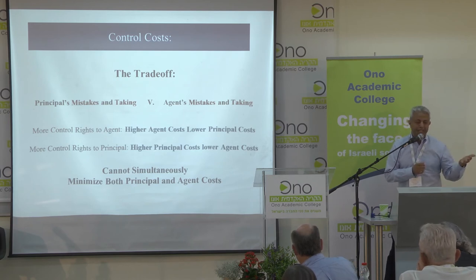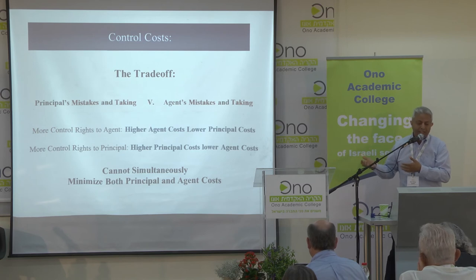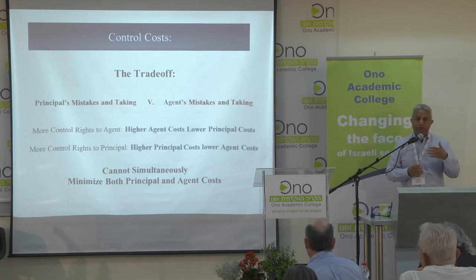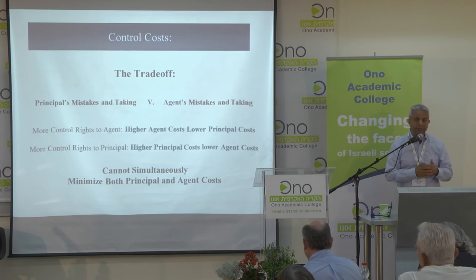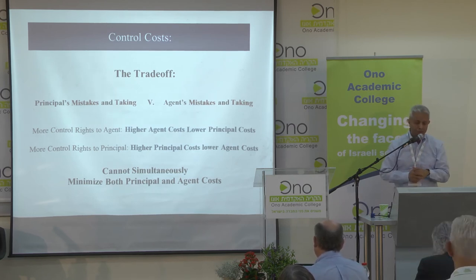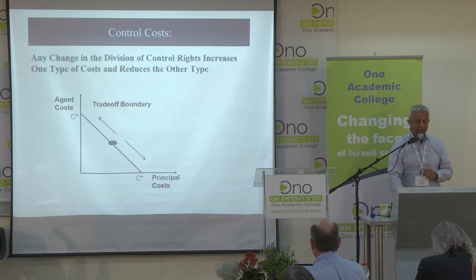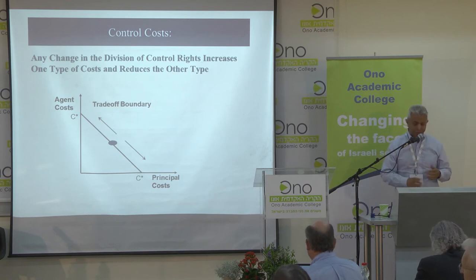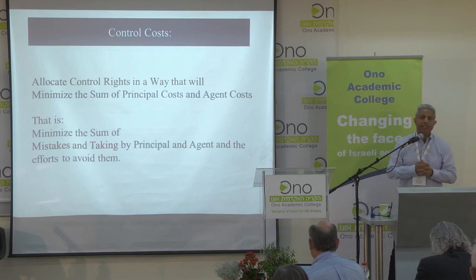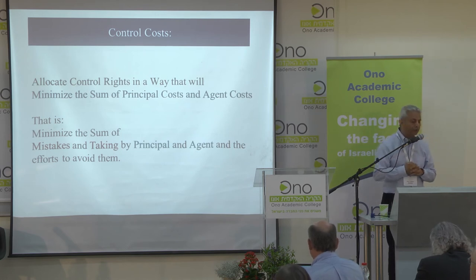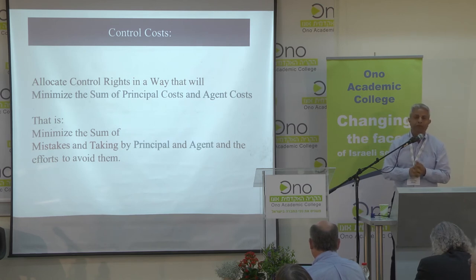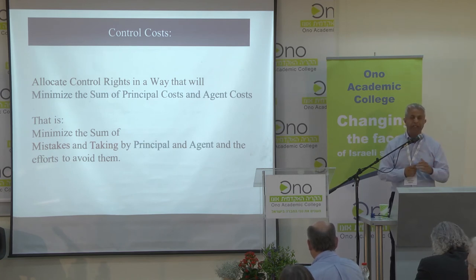The more control rights you give the agent, the higher the agent cost and the lower the principal cost. The more control rights you give the principal, the higher the principal cost and the lower the agent cost. You cannot simultaneously minimize both principal cost and agent cost. Any change in the division of control rights will increase one type and decrease the other. The parties will aim at allocating control rights in a way that minimizes the sum of principal cost and agent cost.